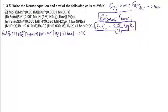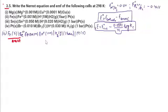Now solving part 2 of question 3.5. On the left (anode), solid iron is oxidized. On the right (cathode), hydrogen ions are reduced to H₂ gas. The double line represents the salt bridge separating the two half-cells.